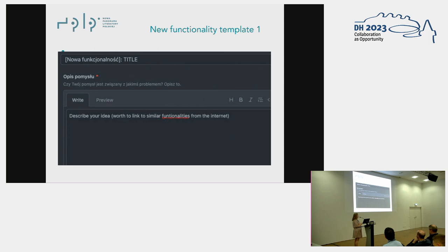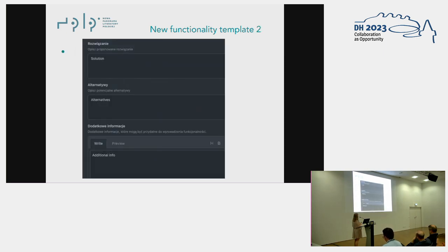The template for new functionalities is much shorter. Apart from the title, you should only describe your idea. Links are not required, but for example: 'I want this functionality and there is something similar on that website.' The more you can visualize your idea, the better it is for developers. The 'Solution' field is for when the new functionality is connected to an error — a rare occasion. There are also 'Alternatives' if you have another idea for the same functionality, and an 'Additional Info' field.